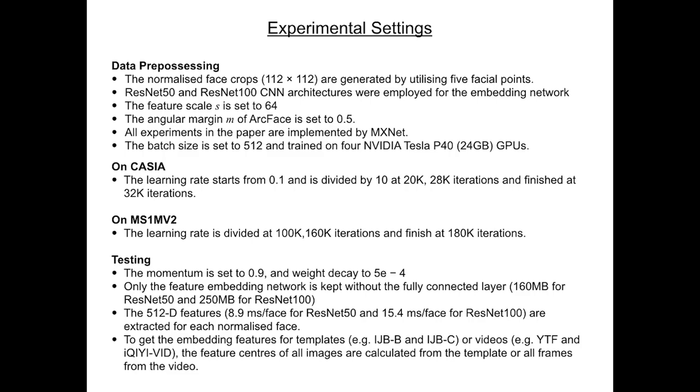Before testing, the normalized face crops 112 by 112 were generated by utilizing five facial points. ResNet-50 and ResNet-100 CNN architectures were employed for the embedding network, which is a widely used standard.